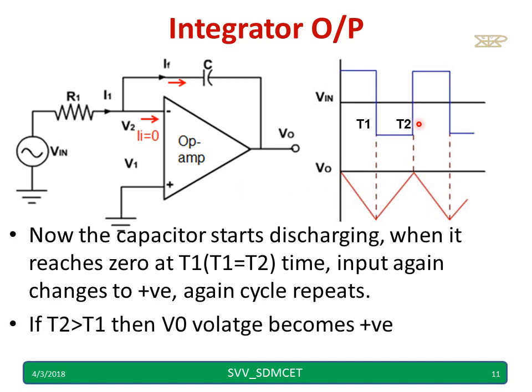If T2 becomes more than T1 there is a chance that output may cross 0 and may go towards positive. This is the important point which you have to understand. Pause it, read it again, try to understand. This is the way how the capacitor charges positive and negative.